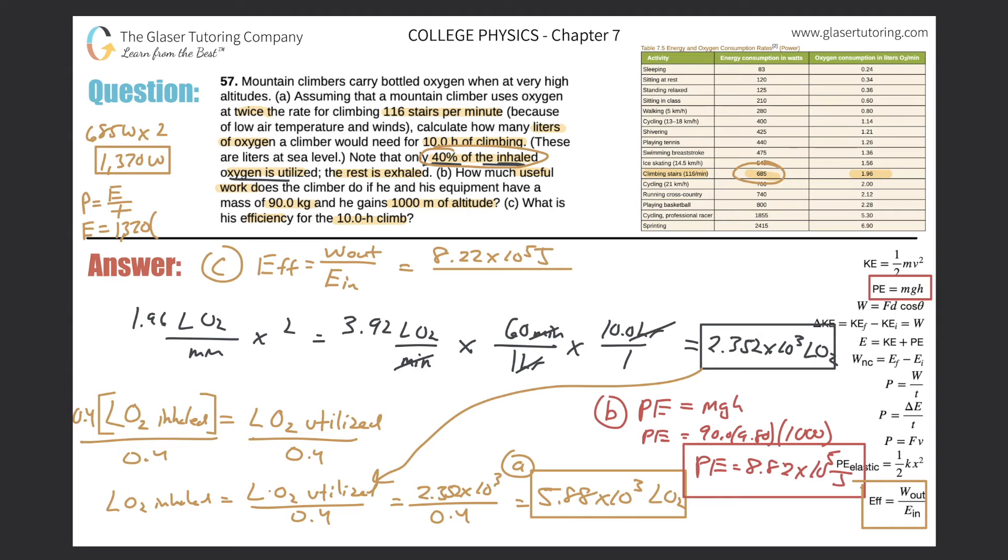I need time in seconds. There's 3600 seconds in an hour, so I take 10 and multiply it by 3600. This answer will be the energy that he is metabolizing, the energy in. So 1370 times 10 times 3600 works out to 4.93 times 10 to the seventh joules.